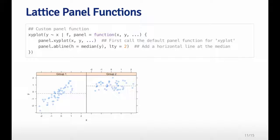Then followed by dot, dot, dot, which means any other arguments that may get passed. In my custom panel function, the first thing I do is I call the default x, y plot panel function just to make the points appear. Then my customization is I add a horizontal line in each panel, which is the median of the y values in that panel.